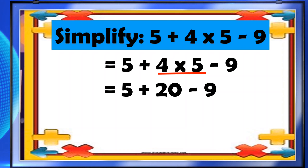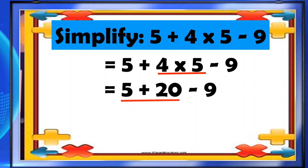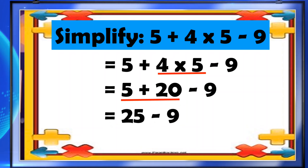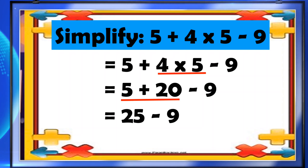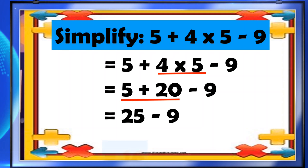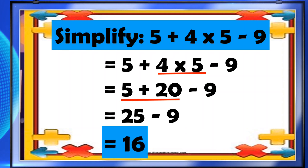The next thing we do is to add 5 and 20. So 5 plus 20 equals 25. Now we have only one operation left, that is subtraction. We have 25 minus 9. So 25 minus 9, our answer is 16.